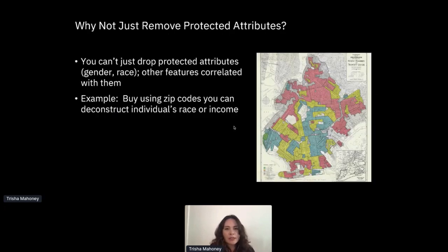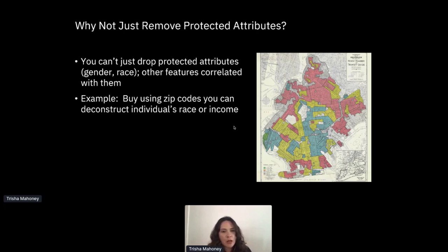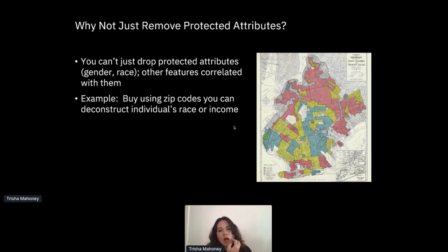A lot of data scientists ask me why they can't just drop protected attributes like race, gender, age, or religion. You can't really drop these attributes because there are too many features that are very closely correlated. For example, if you're looking at zip codes, it's very easy to deconstruct an individual's race or income. This map shows that when it was actually legal, banks were doing this specifically to offer different amounts of credit to different racial minorities.